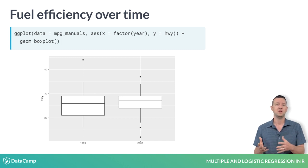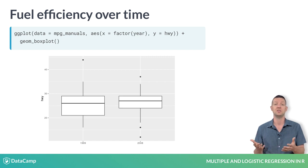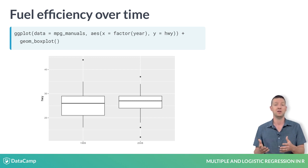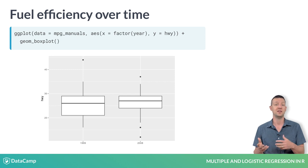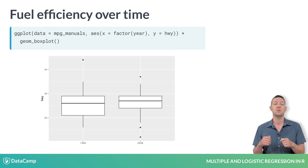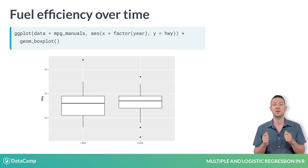How do we know that the increase in fuel economy was not just due to the cars in 2008 generally having smaller engines, which we've already observed to be associated with greater fuel economy? What we really want is a model that will assess the effects of engine size and year simultaneously — we want to understand the effect of time on fuel economy after controlling for engine size.